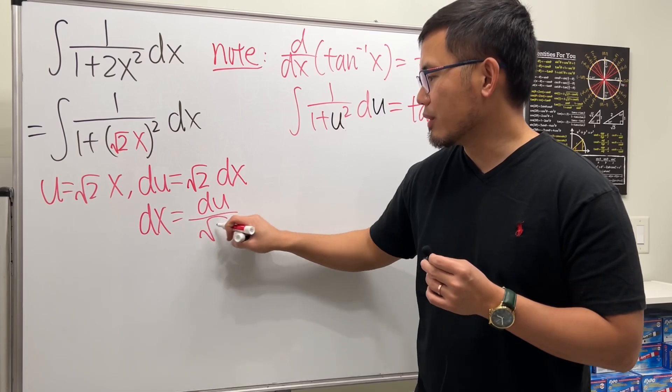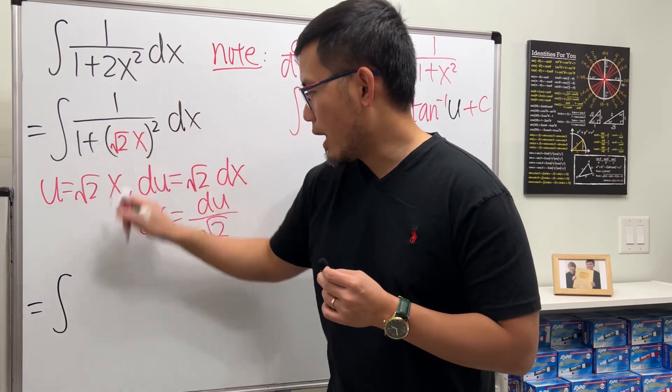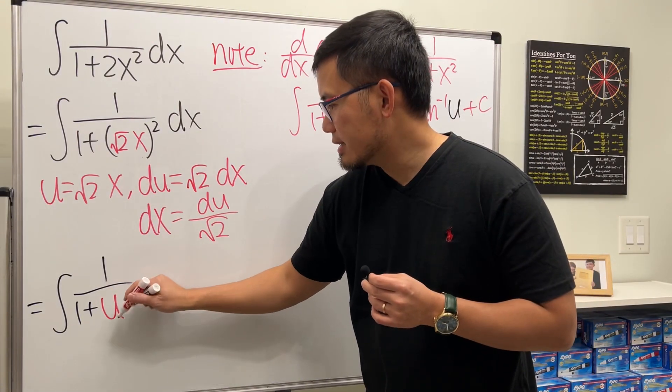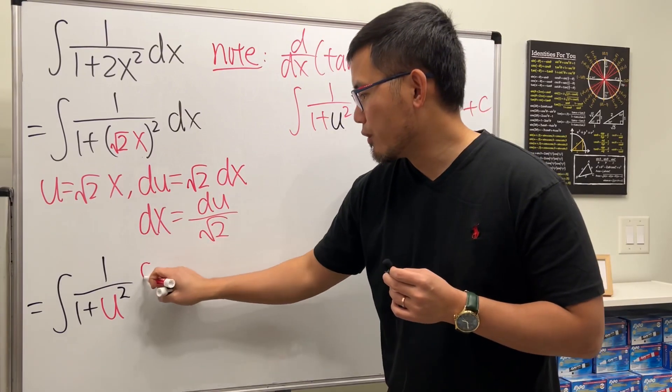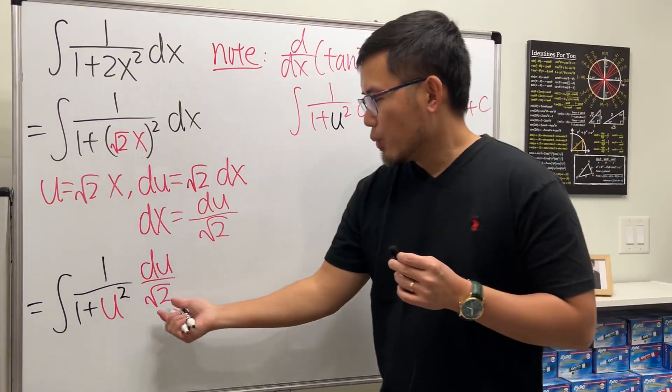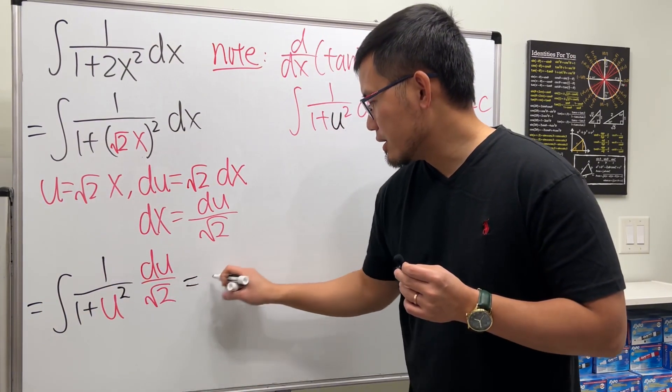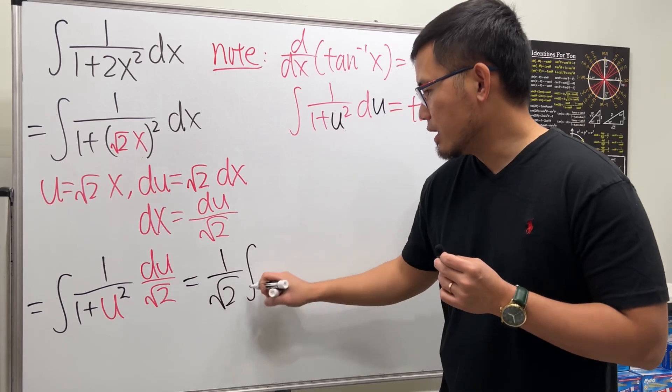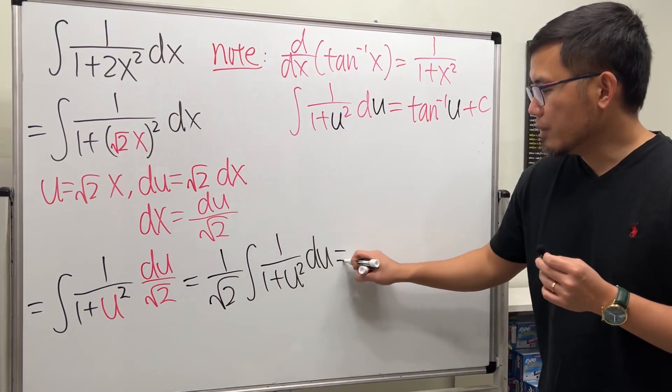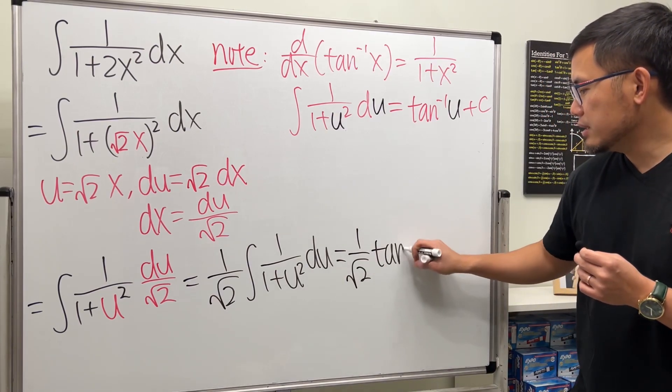Take this integral to the u-world: we get the integral of 1 over 1 plus u squared, and dx is du over square root of 2. We're almost there, but we need to put 1 over square root of 2, which is a constant multiple, outside. This gives us 1 over square root of 2 times the integral of 1 over 1 plus u squared du. Using this, we get 1 over square root of 2 times inverse tangent of